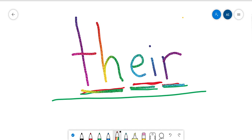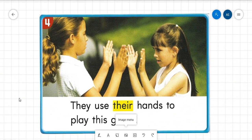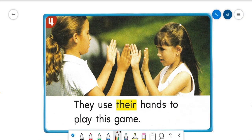You use the word 'their' to talk about something that belongs to more than one person. Over here in our sentence we have two girls clapping hands together playing a game. I'll read the sentence the first time, then the second time I want you to read it with me: 'They use their hands to play this game.' Your turn — read it with me: 'They use their hands to play this game.' They're playing a clapping game and they use their hands to play it.